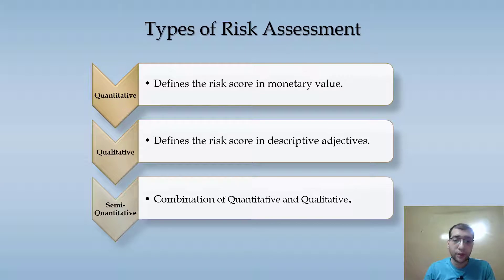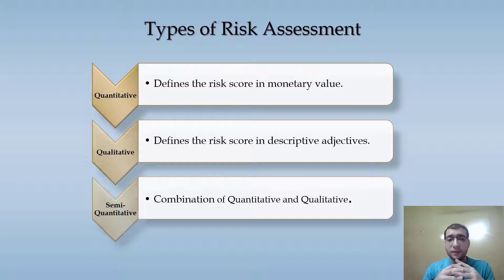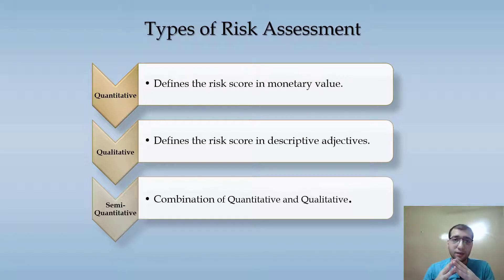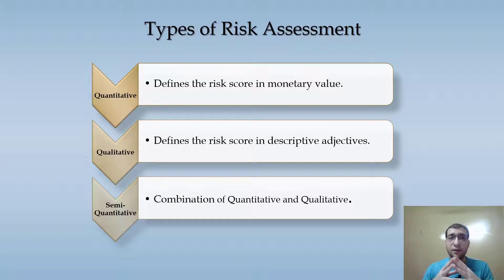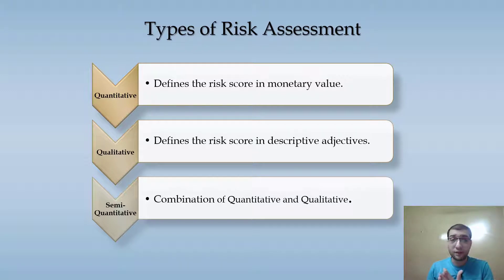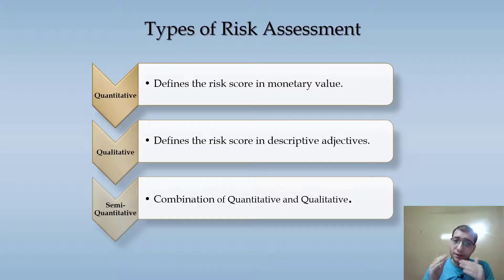The first is called quantitative risk assessment. Quantitative risk assessment talks about risk which is calculated in monetary value. For instance, if information is disclosed, there may be a risk of a regulatory penalty of $10,000. That is a quantitative metric to calculate the risk.